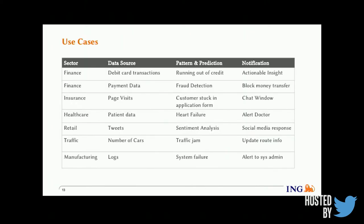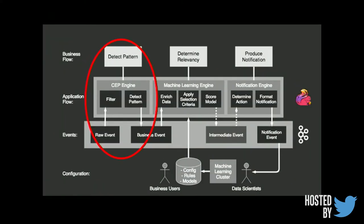If you take a look at the use cases of stream processing frameworks, there are diverse data sources we read from and different communication channels, but one common part is the pattern and prediction component — we read large volumes of data, try to detect some kind of pattern, determine the relevancy of that data, filter it, and send notifications to end users.